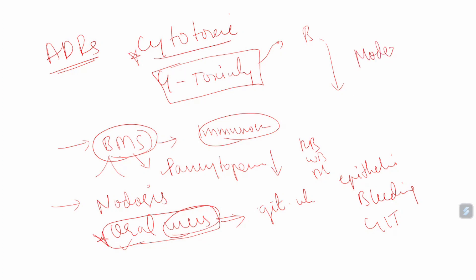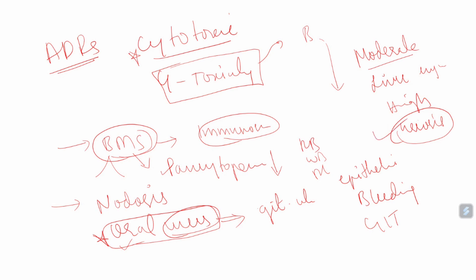In moderate doses, methotrexate causes liver injury. In high doses, it causes liver cirrhosis. It has high hepatotoxic potential. In prolonged use, it causes cirrhosis of the liver. These are important adverse effects associated with methotrexate: bone marrow suppression, pancytopenia, oral ulcers, GI upset, GI bleeding, and liver injury.